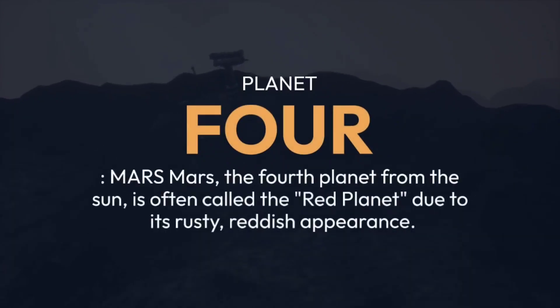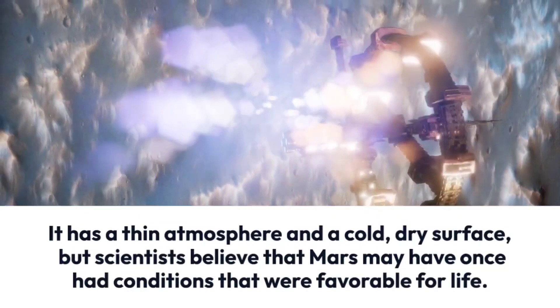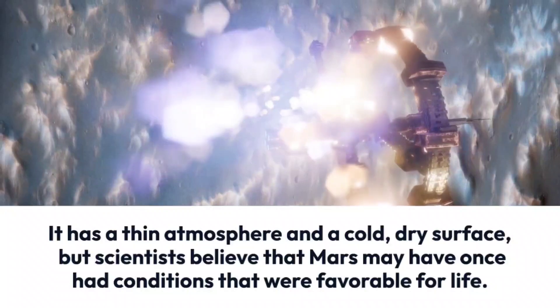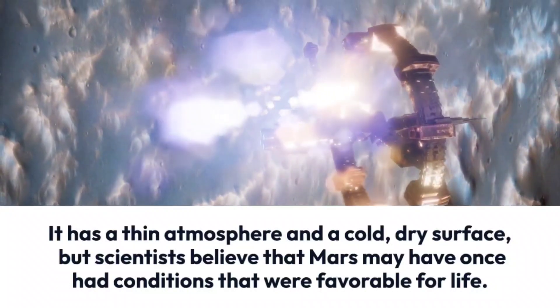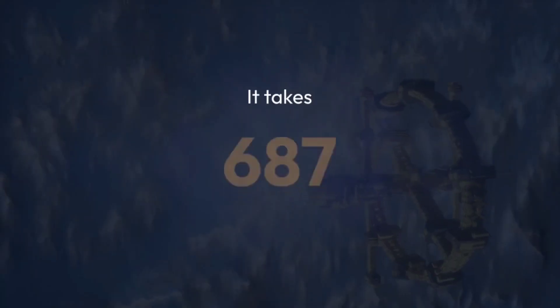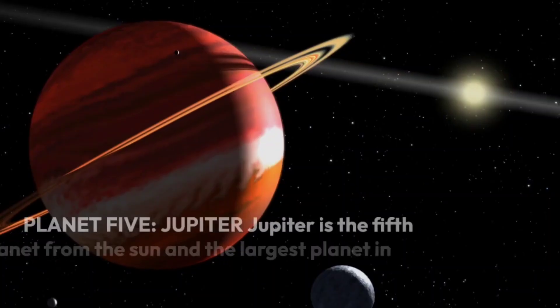Planet 4: Mars. Mars, the fourth planet from the sun, is often called the red planet due to its rusty, reddish appearance. It has a thin atmosphere and a cold, dry surface, but scientists believe that Mars may have once had conditions that were favorable for life. It takes 687 Earth days for Mars to orbit around the sun.